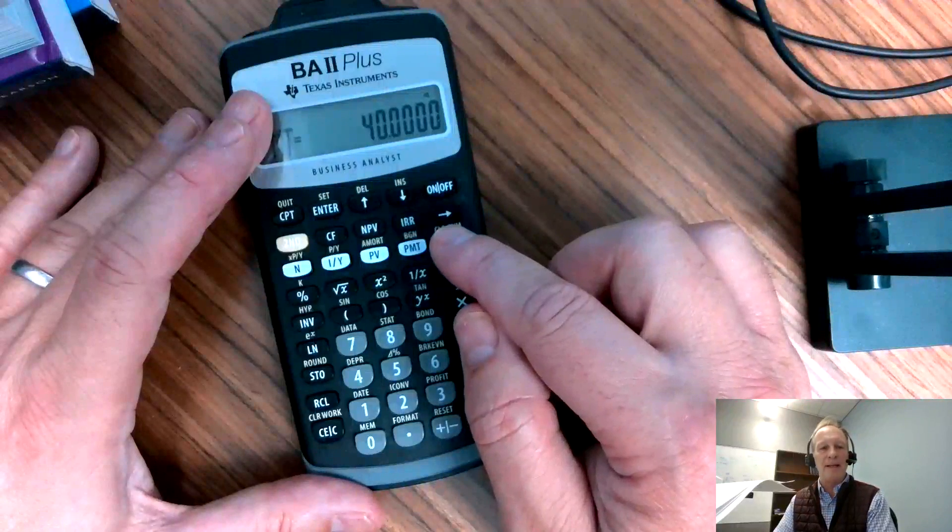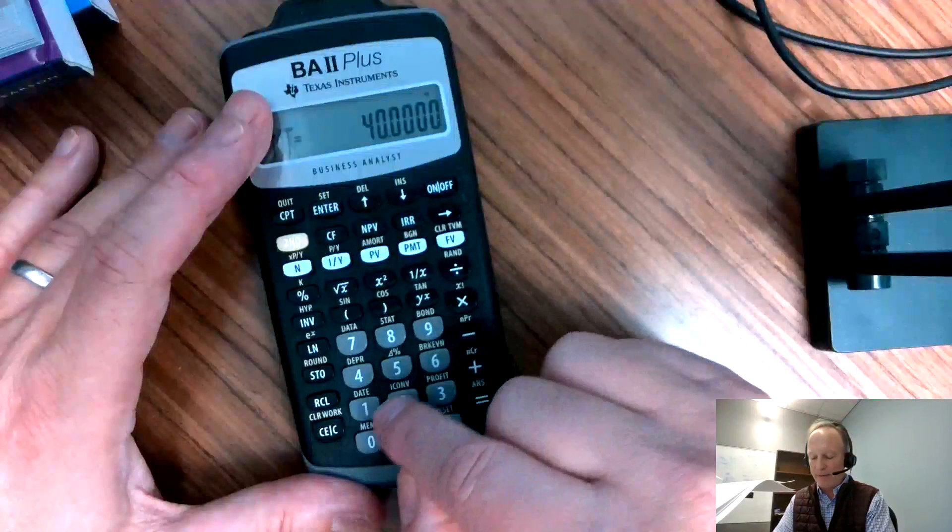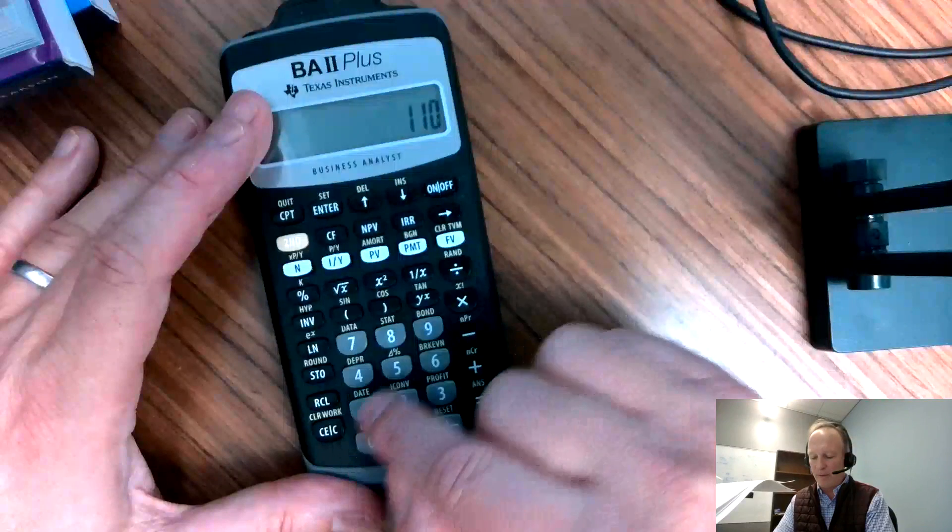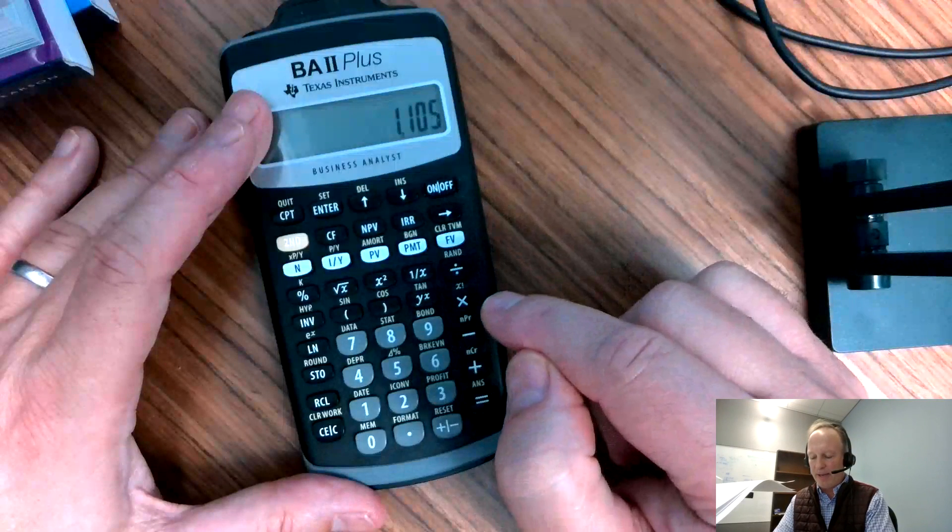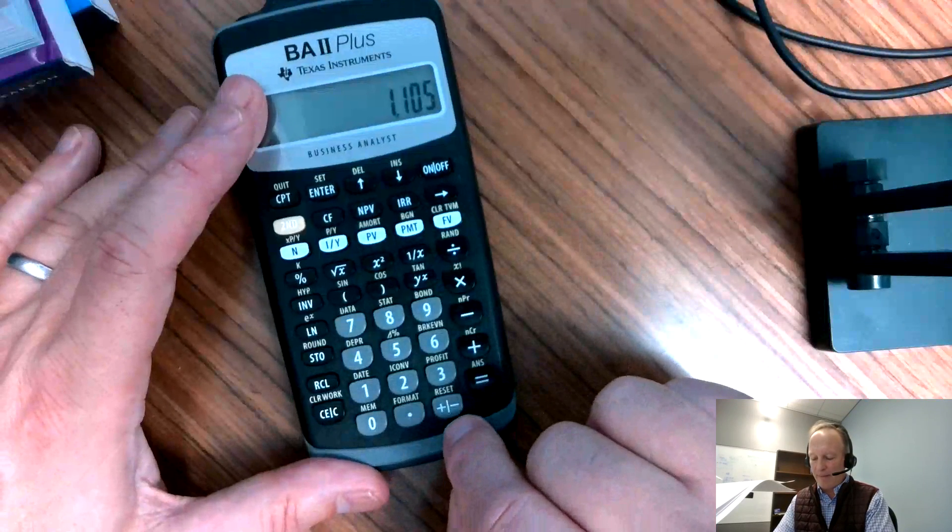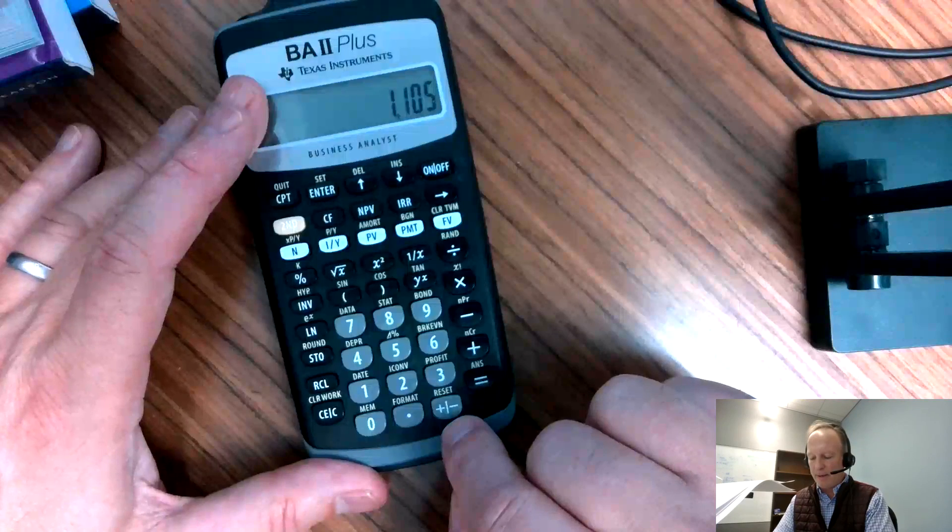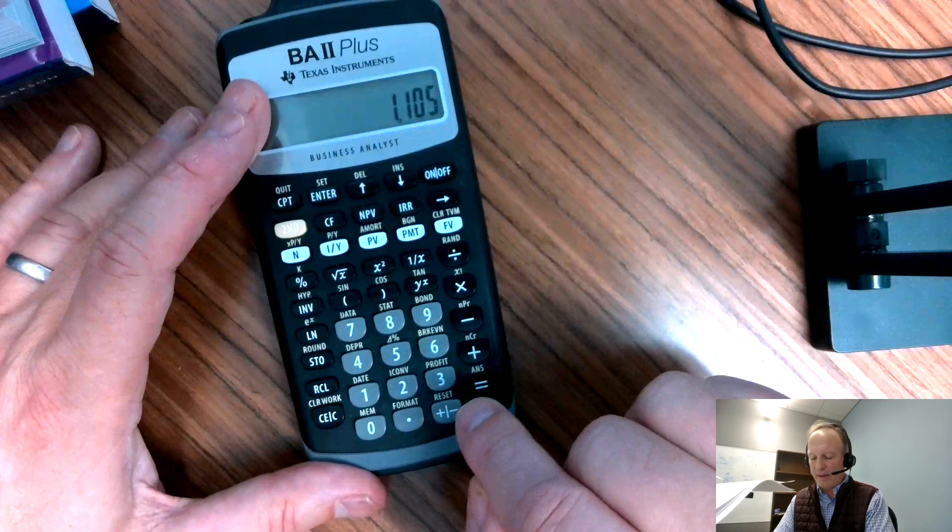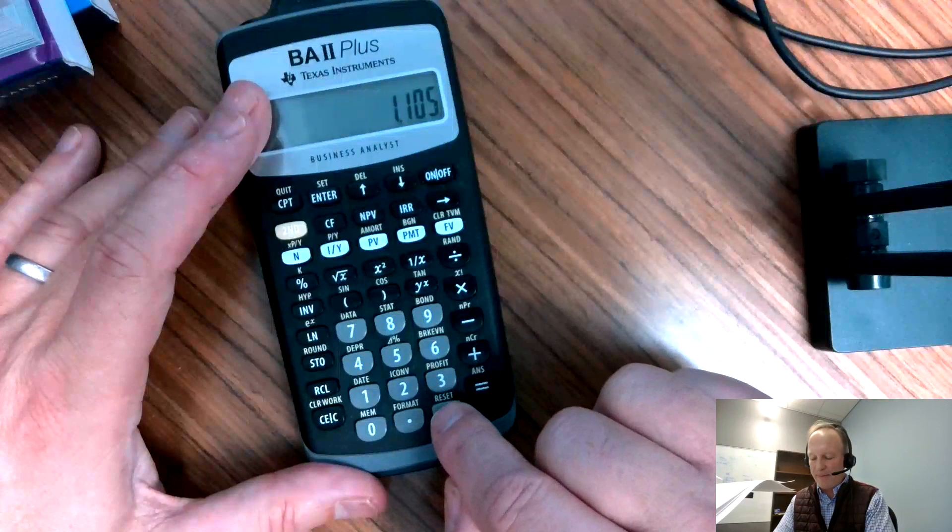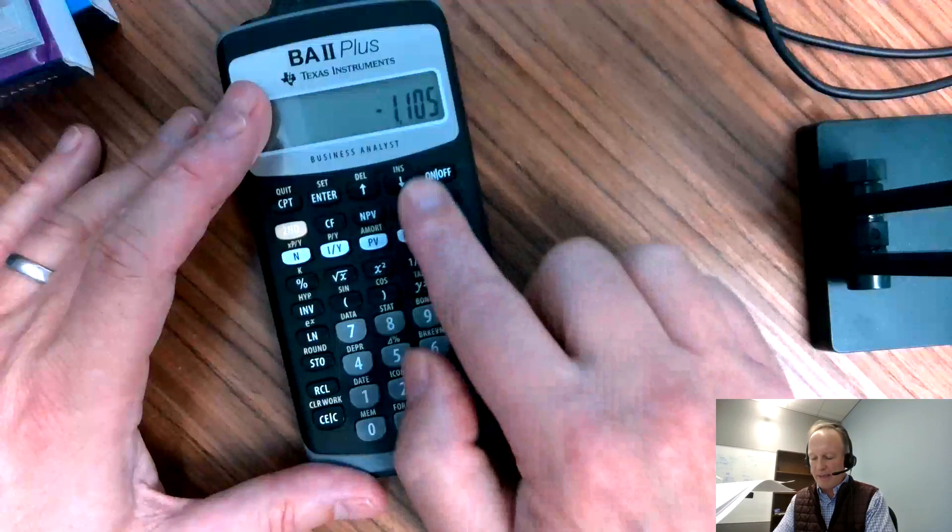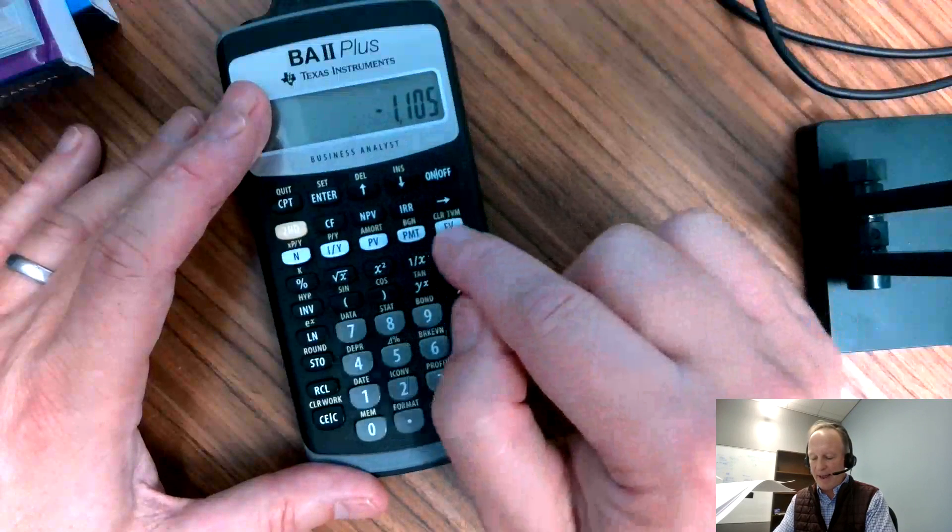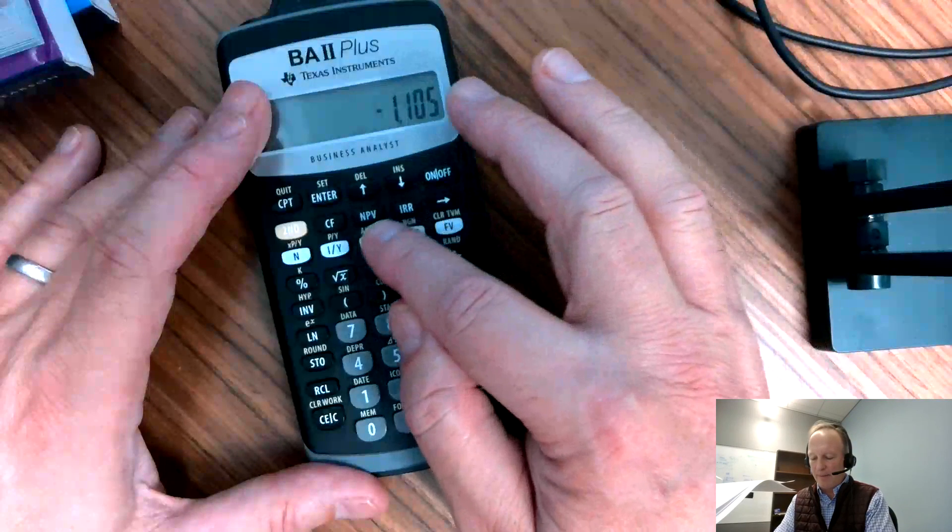And the last thing is 1,105, but it's got to be negative. So how do I do a negative number? Well, I do this. I go 1,105. I put that in, and then I go down here to the bottom, this plus minus sign in the Texas Instrument BA2 Plus calculator. I hit that. That gives me a minus sign there. You see that. Now I hit present value.